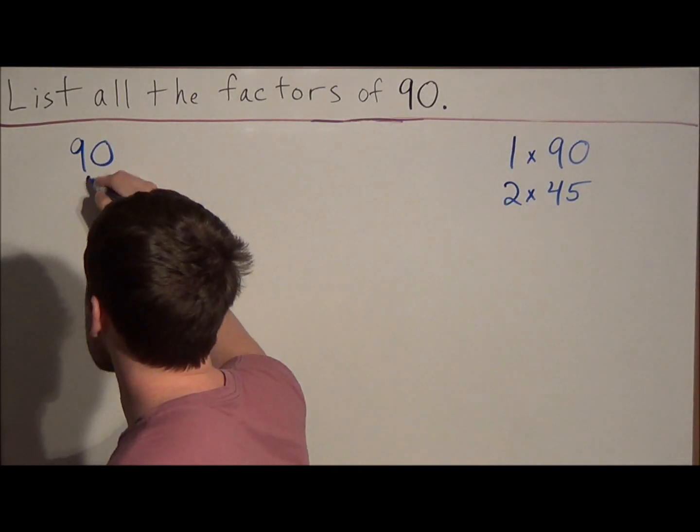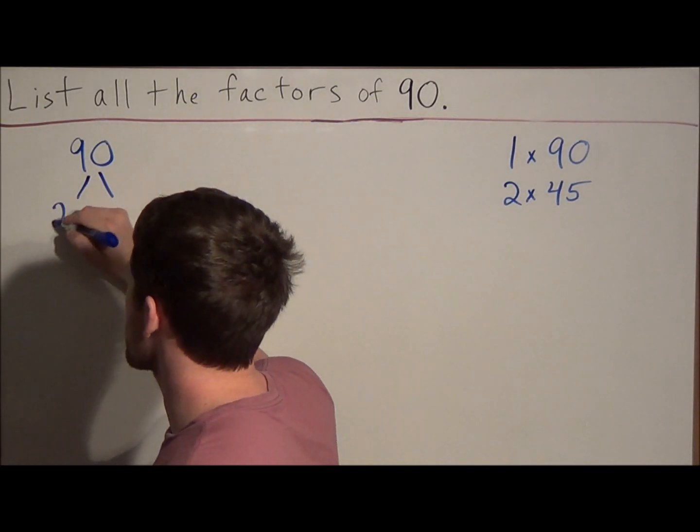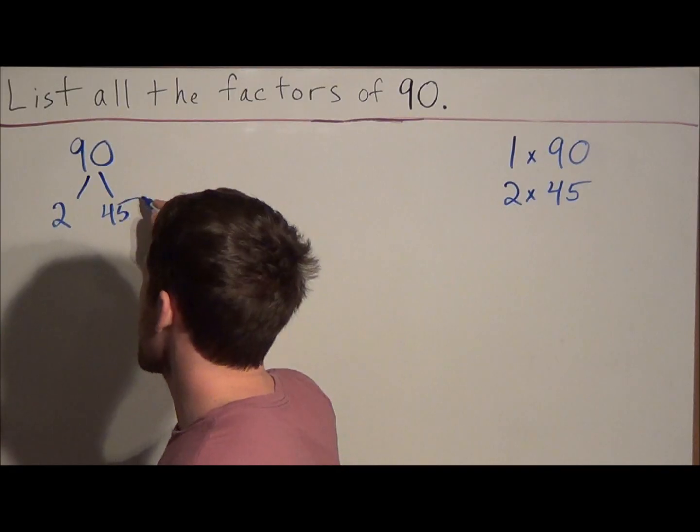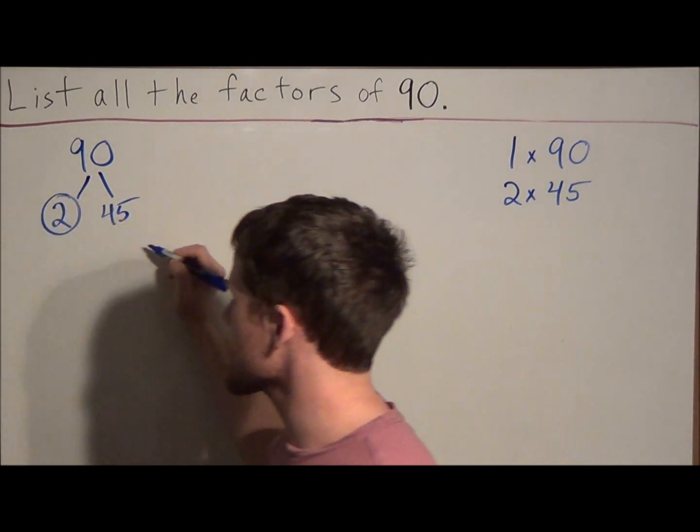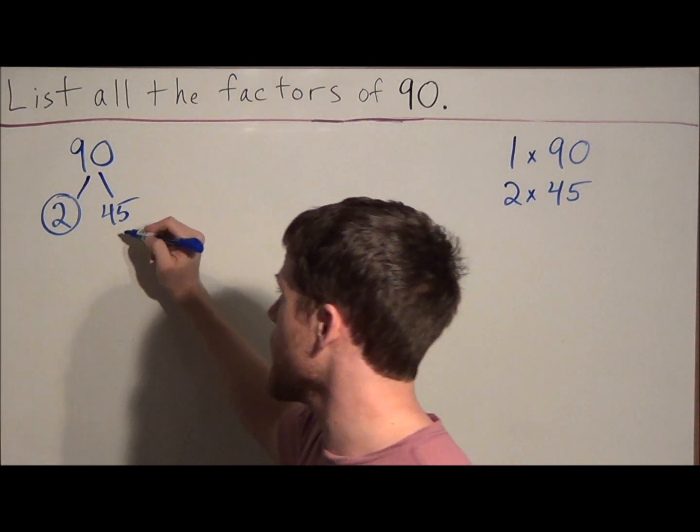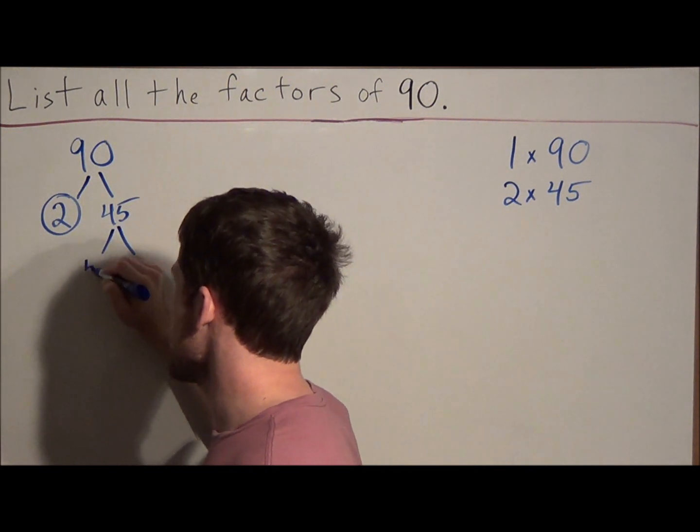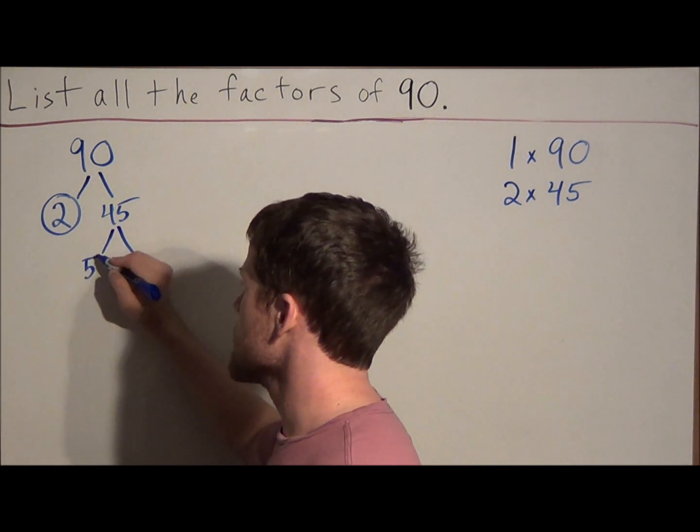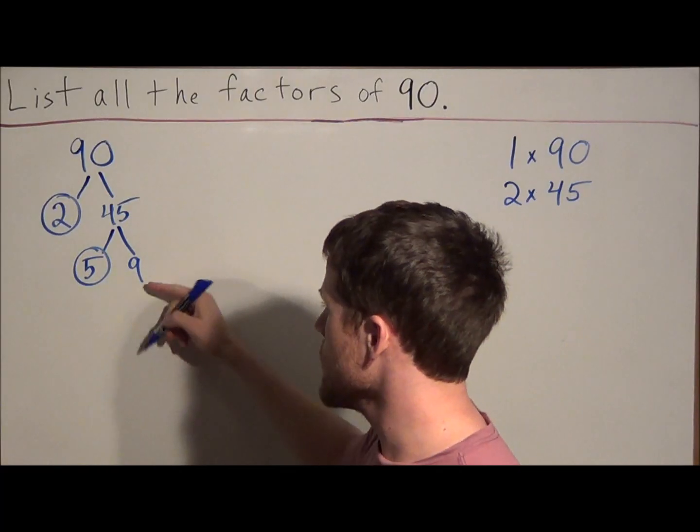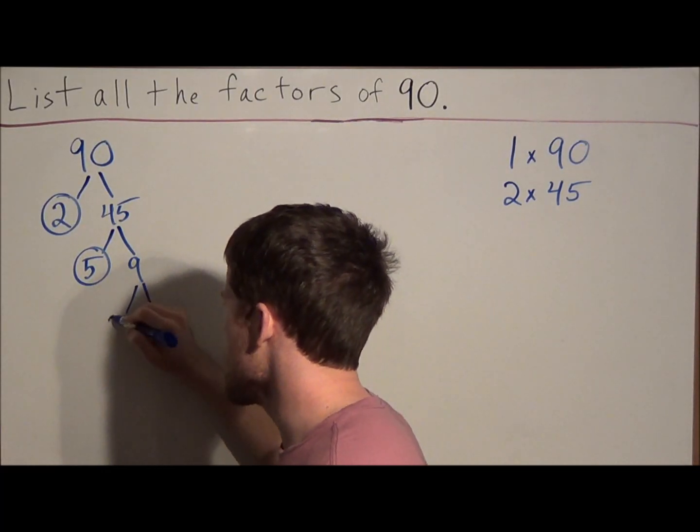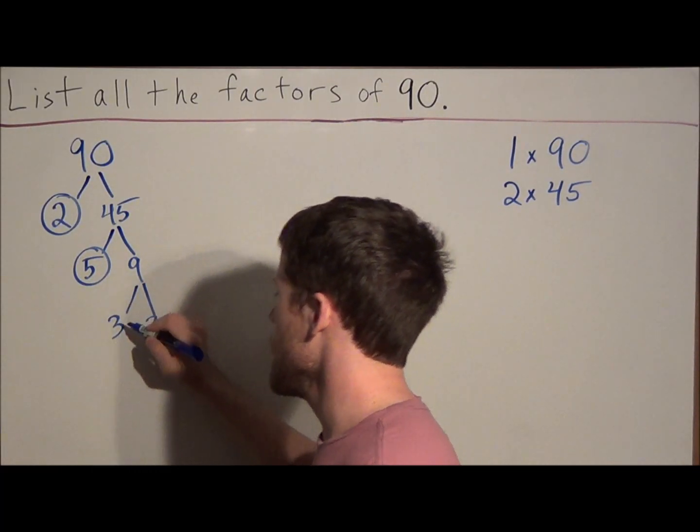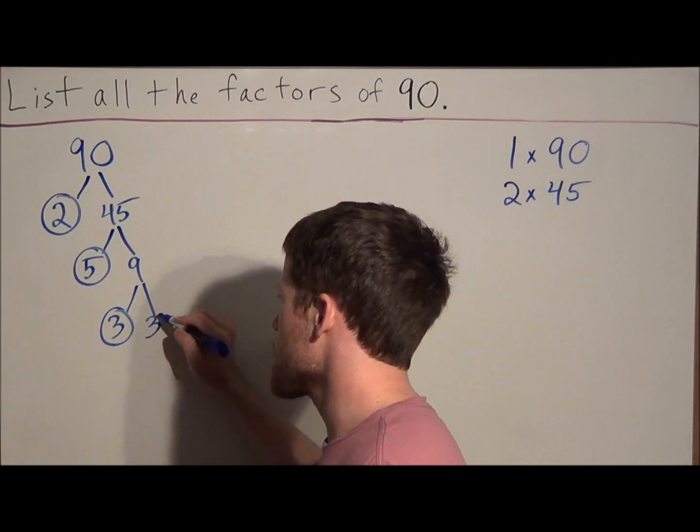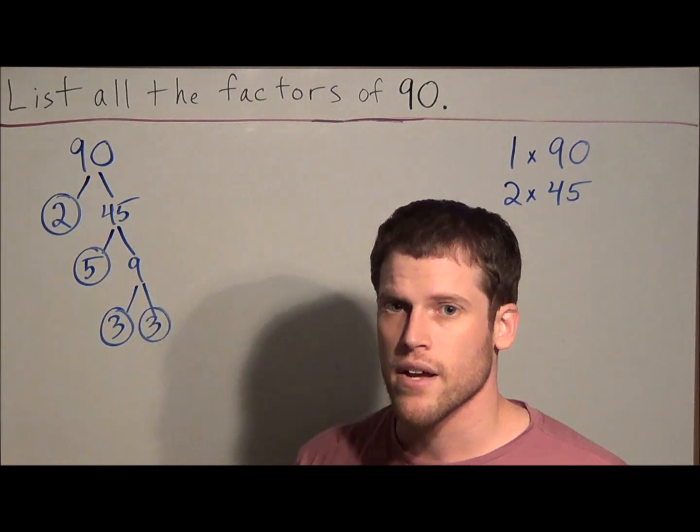So what we do is we're going to break this down, and we could start with 2 times 45, and since 2 is prime, we could circle it, and now we have to decompose 45. So we're going to break this down to 5 times 9. Since 5 is prime, we could circle it, so then we have to break down 9, and 9 is equal to 3 times 3. 3 is a prime number, so we could circle both of the prime factors.